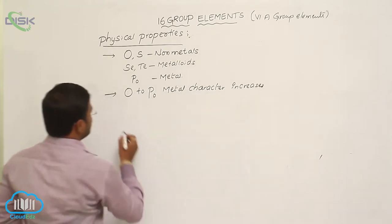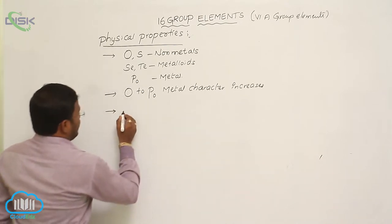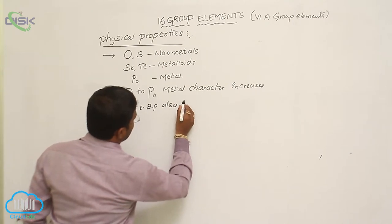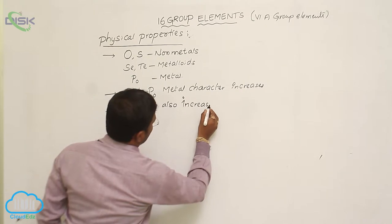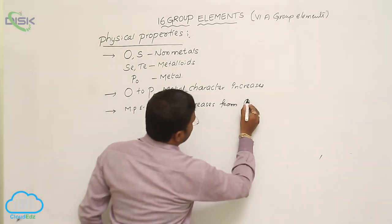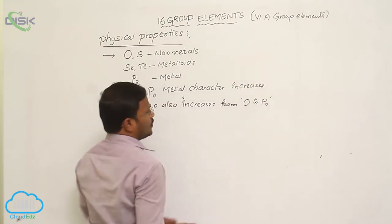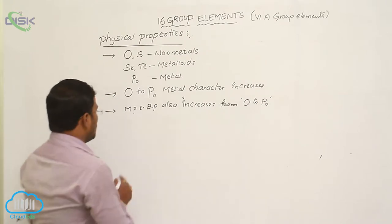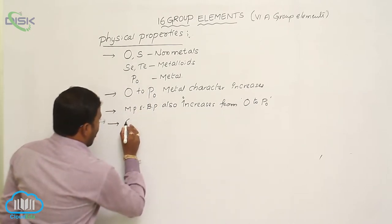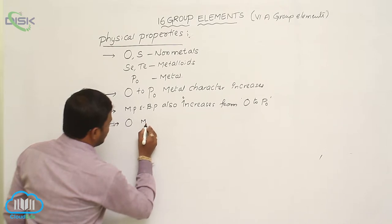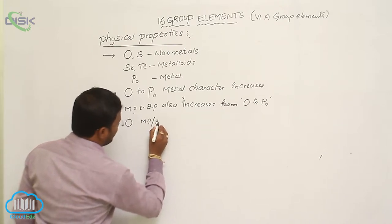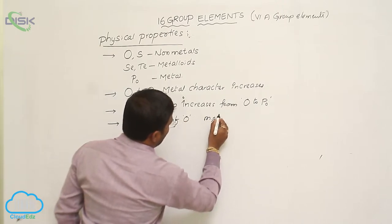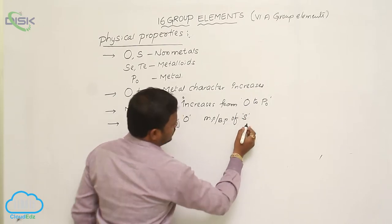Melting points and boiling points also increase from oxygen to polonium, from top to bottom. However, there is an important competitive question here: why is the melting point or boiling point of sulfur very high compared to that of oxygen?